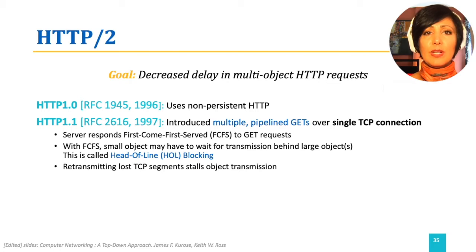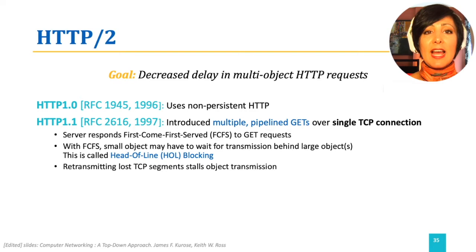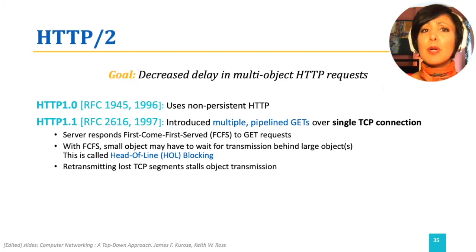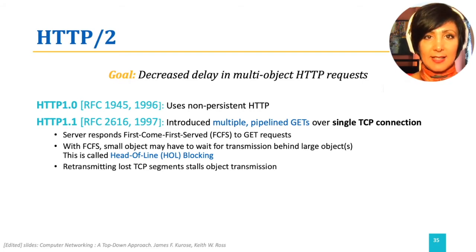HTTP 1.1 enabled persistent HTTP and allowed multiple pipelined GETs over a single TCP connection to decrease delay. However, a problem called head-of-line blocking that could happen in transmission of large objects could slow the process down.